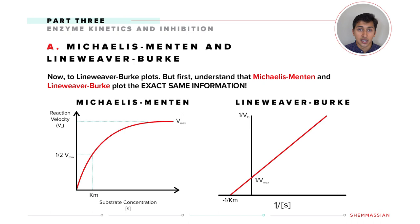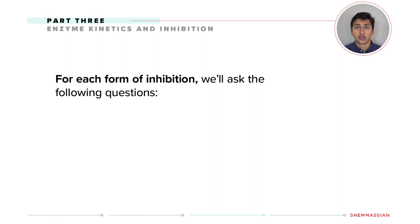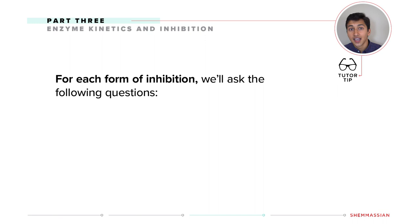When it comes to enzyme inhibition, there are three questions you'll need to answer. As a tutor tip, try to apply this method of identifying key points when you study other MCAT subjects. Your tutors will point these out, but it'll work best if you also synthesize the information and make connections in a way that makes the most sense to you.